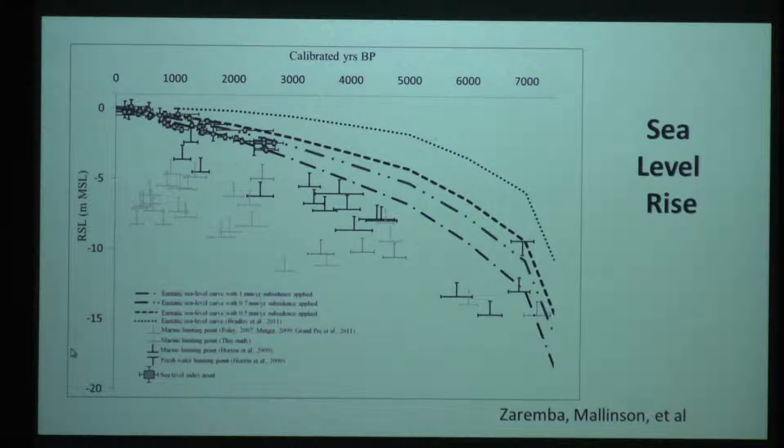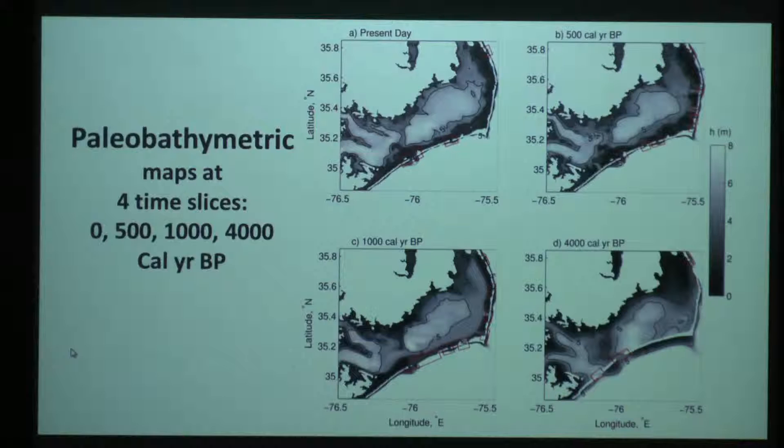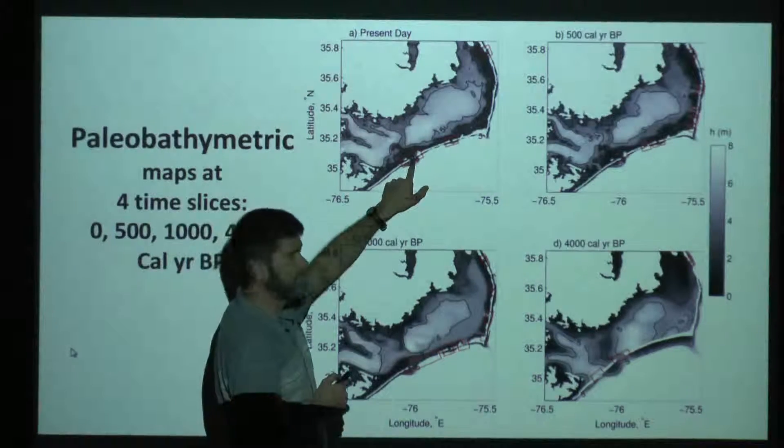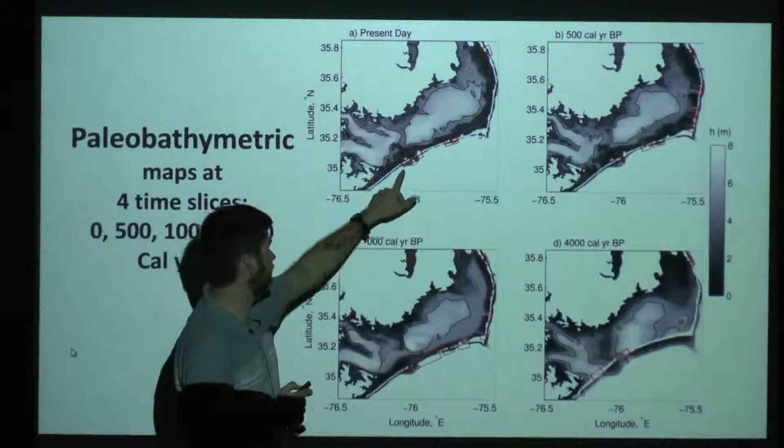But in the estuaries, those sediment cores are recorders of things that have happened in the past. Not only Nick Zaremba and Dave Mallinson, but another guy named Ben Horton has done a lot of work to look at mean sea level changes over the last few thousand years. So we're using those sea level curves to change the mean sea level. We're changing the shape or the bathymetry, and we're doing one more major and important thing. We're changing the location and the width and the number of tidal inlets.